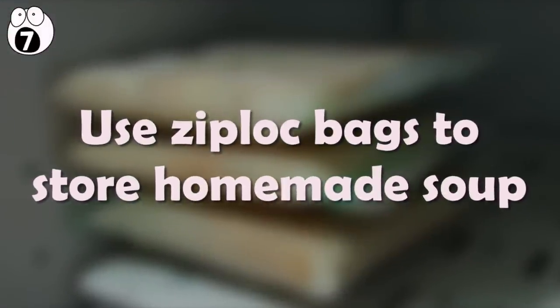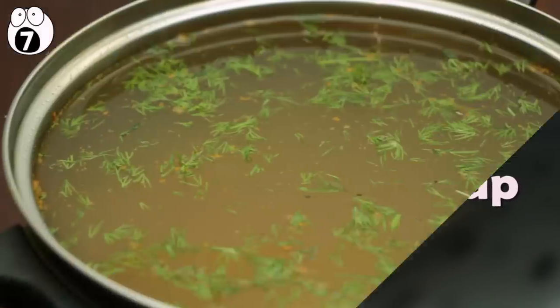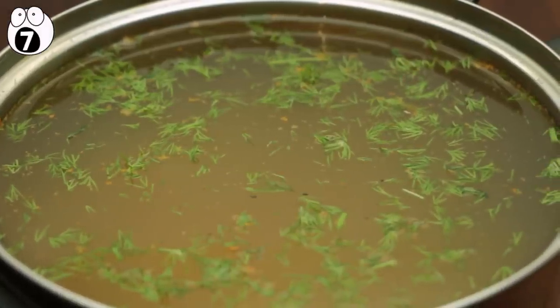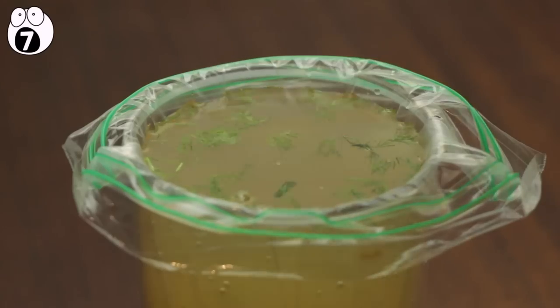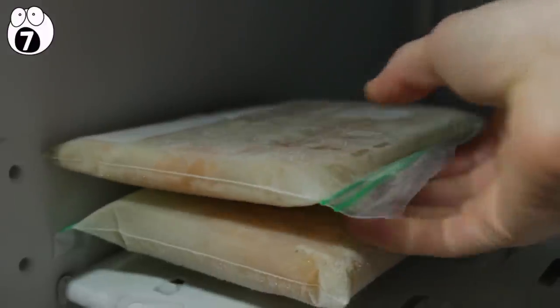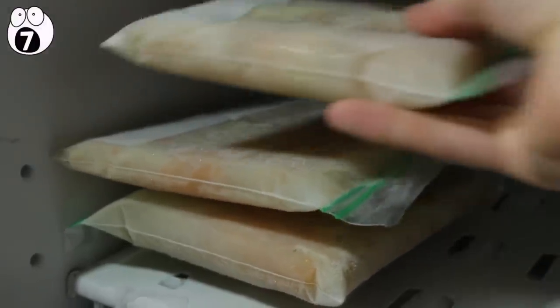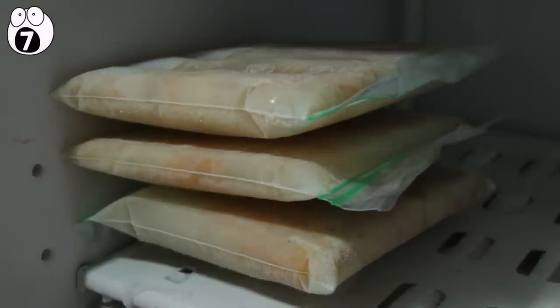Number 7. Use Ziploc bags to store homemade soup. This is handy if you have a dinner party coming up soon and need to store an awful lot of soup in a short space of time. Simply fill up a Ziploc bag with soup, place it flat in a freezer, and once it's frozen you can pile up more bags on top of each other. This is also how the restaurants will often store meat because of its large surface area when packed flat.